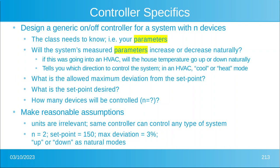You want to design a generic on/off controller for a system with n devices. The class needs to know: will the measured system's parameter increase or decrease naturally? That tells you which direction to control the system — in an HVAC, for example, cool mode or heat mode. What is the allowed maximum deviation from the set point? What is the set point? How many devices will be controlled? Make reasonable assumptions — units are irrelevant because the same controller can control any type of system.